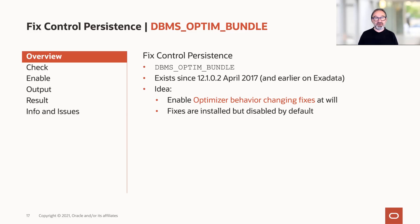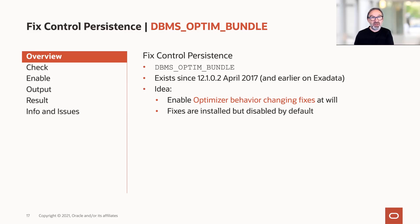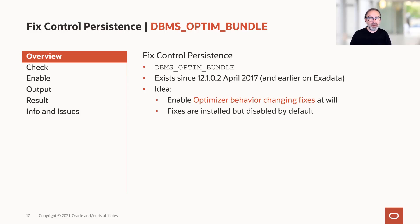Now in 12.2, it's the release updates and the release update revisions. When such behavior-changing optimizer fixes are included in a bundle patch, they are turned off by default. Now you want to turn them on, and even more, you would like to apply the next RU maybe in April and keep the settings from before persistent. This is realized via DBMS Optin Bundle — available for non-engineered systems since the 12.1.0.2 April 2017 bundle patch.